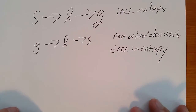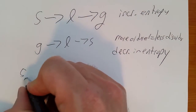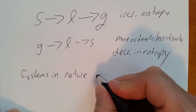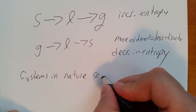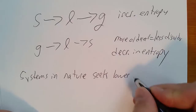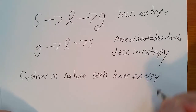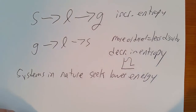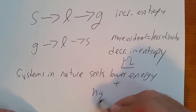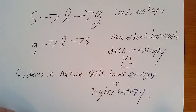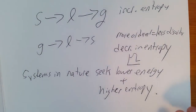Finally, systems in nature seek the perfect combination of lower energy and higher entropy. That would be an exothermic reaction with higher entropy. That brings us to the end of our review for Unit 6. I will see you guys in school.